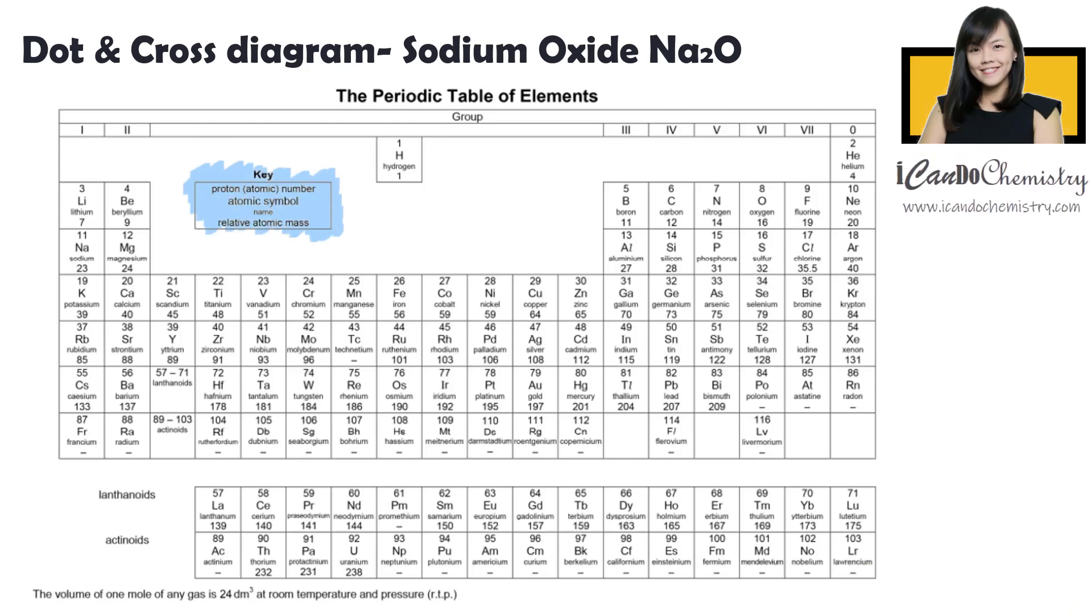In this periodic table, the number at the top tells us the number of protons this atom has. Now we know that in an atom, the number of protons and electrons are the same. Hence, we can actually determine how many electrons the particular atom has by referring to this number.